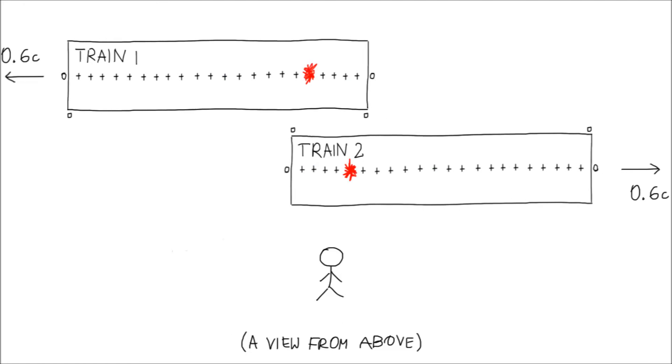So, the sensors which receive the two pulses of light at the same time are at the back of each train. The firecracker explosion occurs not in the middle of the train, but closer to its back.